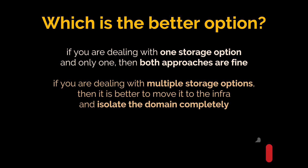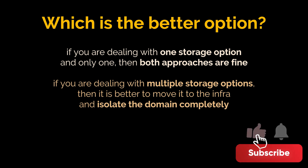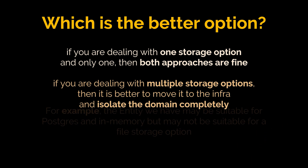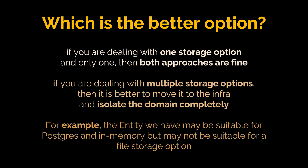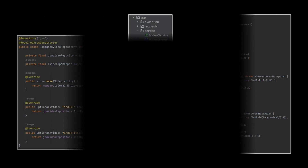However, if you are dealing with multiple storage options similarly to the new design we just introduced, then it is better to move the mapper to the infrastructure and isolate the domain completely. This is because multiple storage options may introduce multiple entity types — for example, the video entity we have may be suitable for Postgres and in-memory, but may not be suitable for a file storage option. Handling all these conversions in our core module does not align with clean architecture principles.